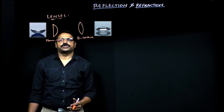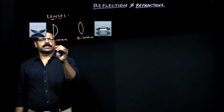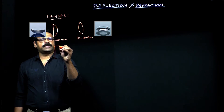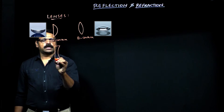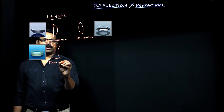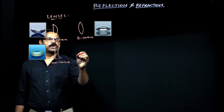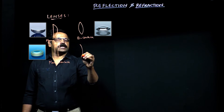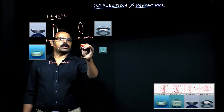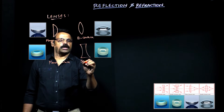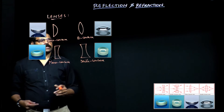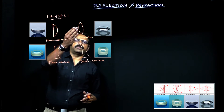Similarly, when you grind the glass plate such that it is flattened at the middle, you call it plano-concave. And if it is flattened at the middle on both sides, then you call it double concave.